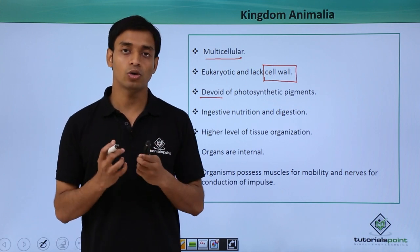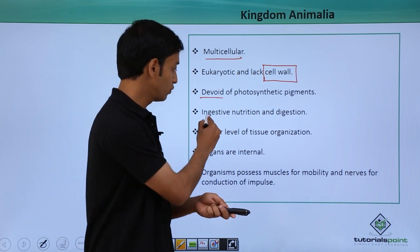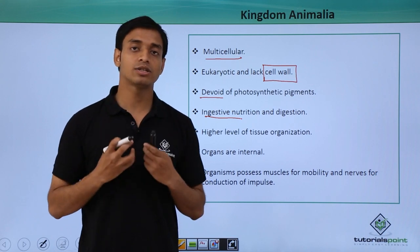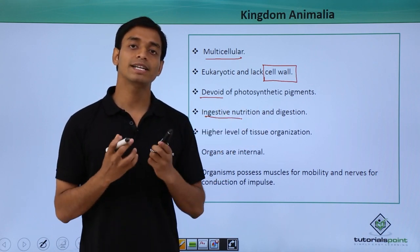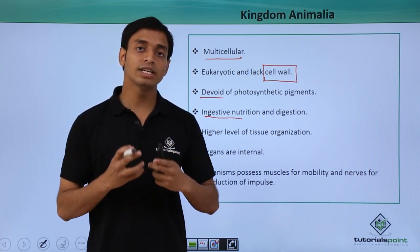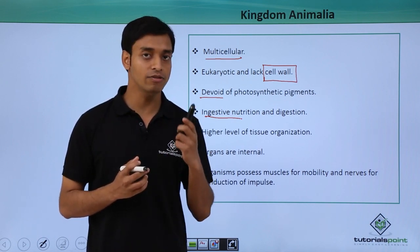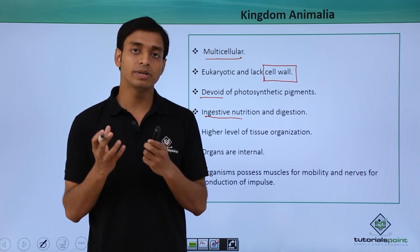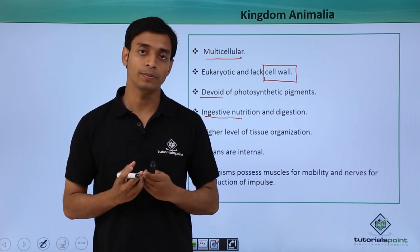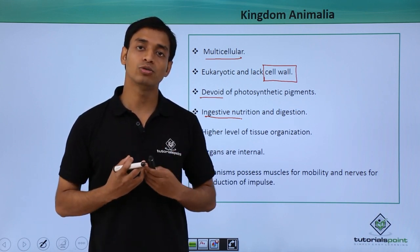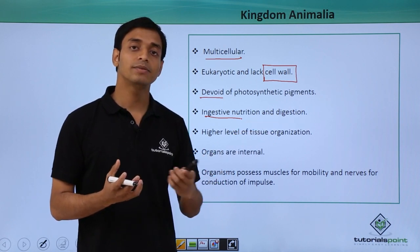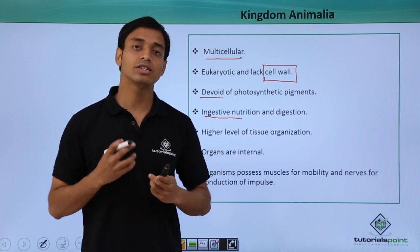The type of nutrition these animals follow is mostly ingestive nutrition. This means the organism takes in food inside its body and digestion also takes place inside the body. Unlike some other organisms that secrete digestive enzymes outside into the environment to break down complex materials into simpler substances and then absorb them, here, animals take in the food as a whole and then digest it internally.